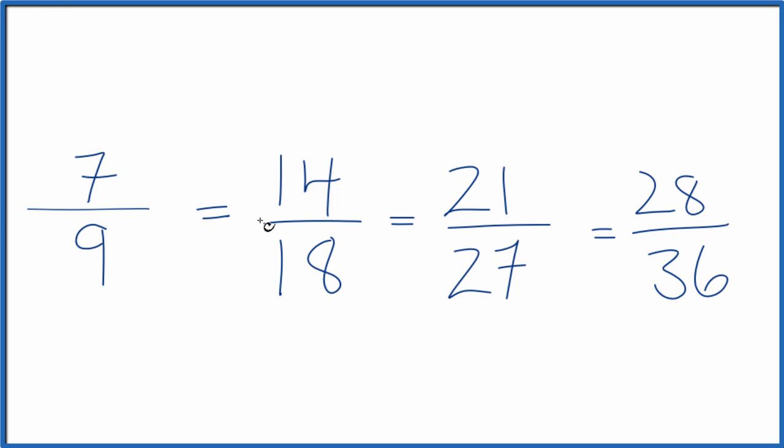And if you divide 7 by 9, 14 by 18, 21 by 27, or 28 by 36, you'll get the same decimal answer. These are equivalent fractions.